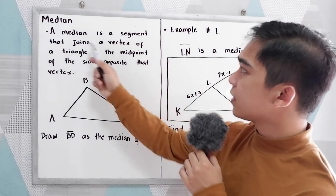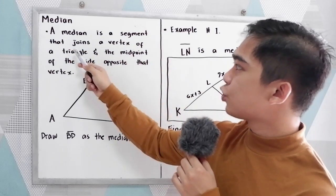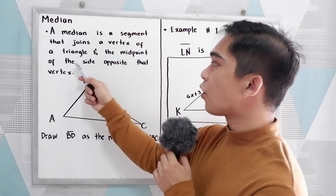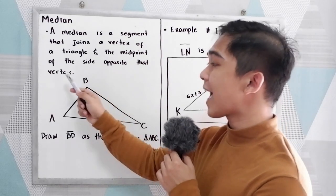A median is a segment that joins a vertex of a triangle and the midpoint of the side opposite that vertex.